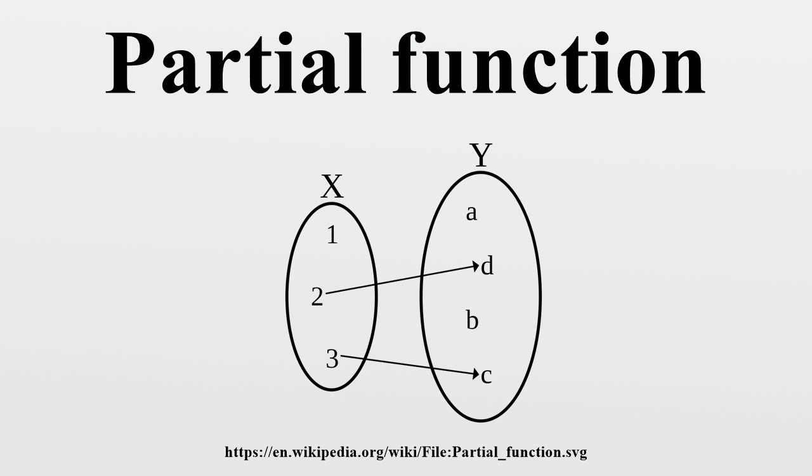For example, we can consider the square root function restricted to the integers. Thus g is only defined for n that are perfect squares. So g(25) equals 5, but g(3) is undefined.